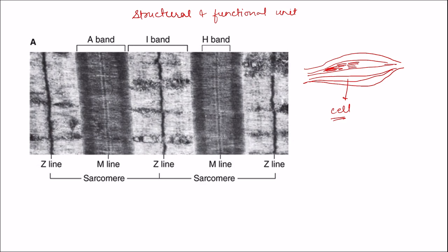The arrangement of these myofilaments or proteins forms different zones under light microscopy and electron microscopy. The sarcomere has thin filaments and thick filaments, with various proteins in each. The arrangement is such that some parts of the thin and thick filaments overlap and some don't.